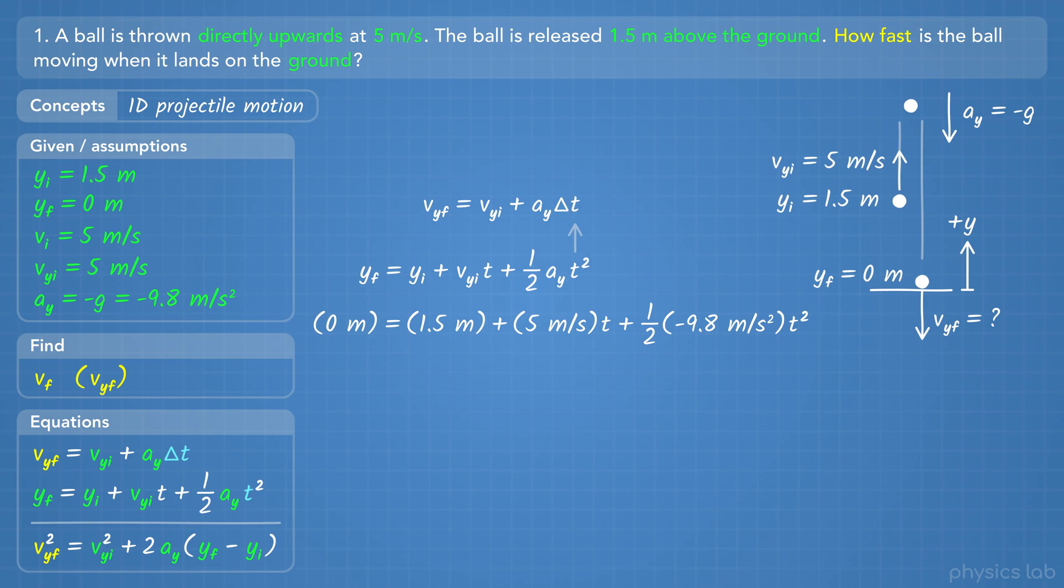We can either plug this into a calculator that can automatically solve for t, or we need to use the quadratic formula. In that case, we need to simplify and rearrange this equation so it's in this form. You can move things around so the terms are in the same order, but the important part is that one side of the equation is 0, and we have 3 coefficients, or numbers, a, b, and c. a is the number multiplied by t squared, which is negative 4.9, b is the number multiplied by t, which is 5, and c is the number all by itself, which is 1.5.